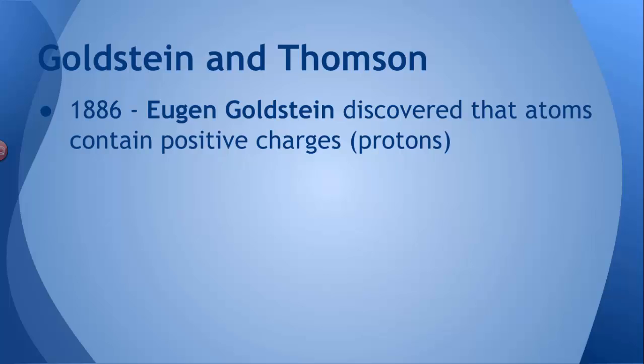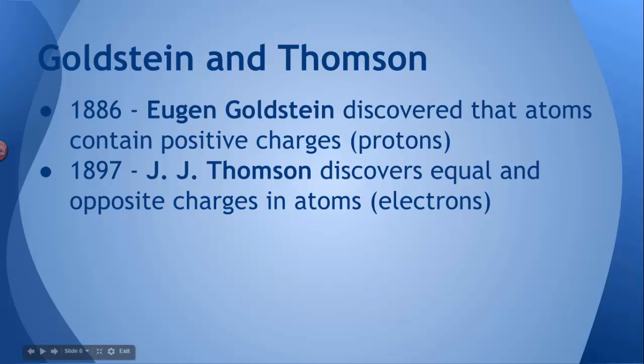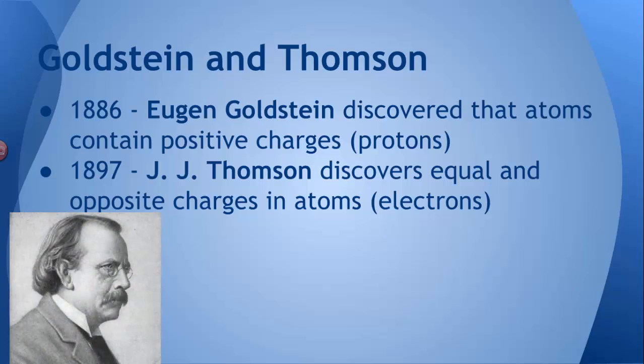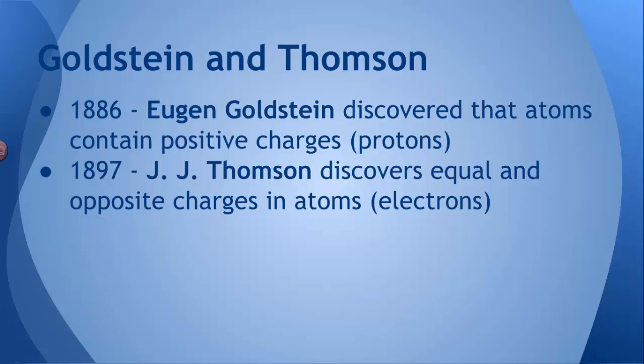This was a big deal because this sort of proved that atoms, in fact, were made of smaller pieces. A little bit later on, a few years later, in 1897, English physicist J.J. Thompson found that there were equal and opposite charges in atoms. Those were called electrons after this new idea of electricity, which dealt with positive and negative charges. And so electrons were the main contribution of J.J. Thompson.